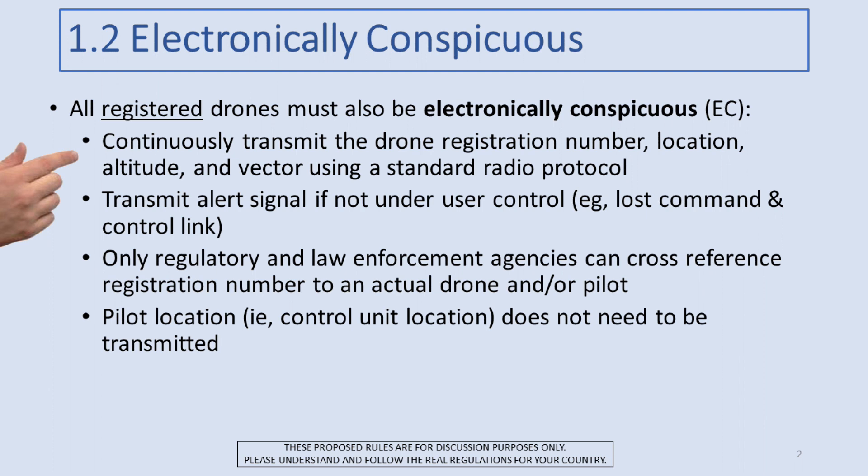The electronically conspicuous signal should also transmit a special alert signal if the drone is not under user control — for example, if you lose the command and control link. There may be other circumstances too, but that's certainly a key one. If the drone is no longer under user control, it needs to transmit an alert signal so it will not only be conspicuous but it will be clear this thing is in a flyaway situation.